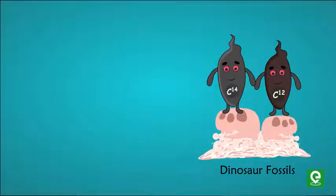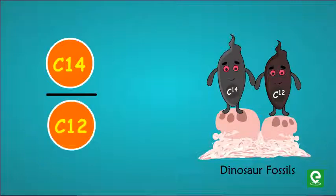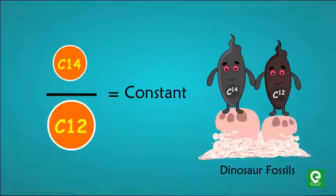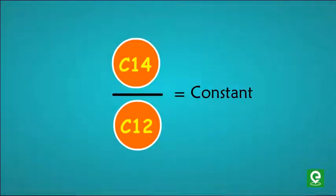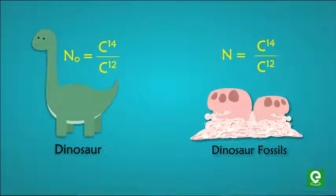For any living creature, ratio of C14 and C12 is constant. But as soon as the creature dies, the concentration of C14 starts decreasing, thus decreasing the ratio of C14 and C12. By knowing the ratio of C14 and C12, we can find the age of any fossil by using similar formula as above, where N₀ is the ratio in a living being and N is the ratio in the fossil.